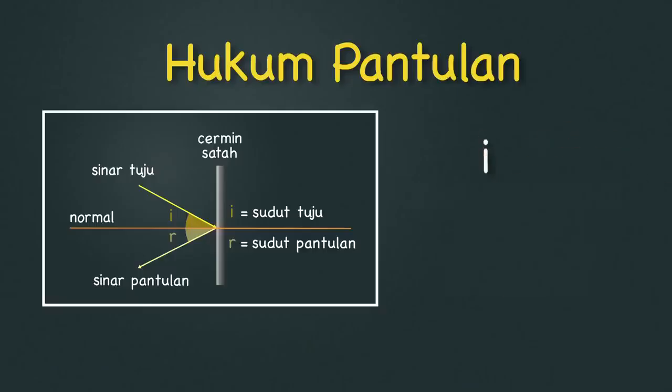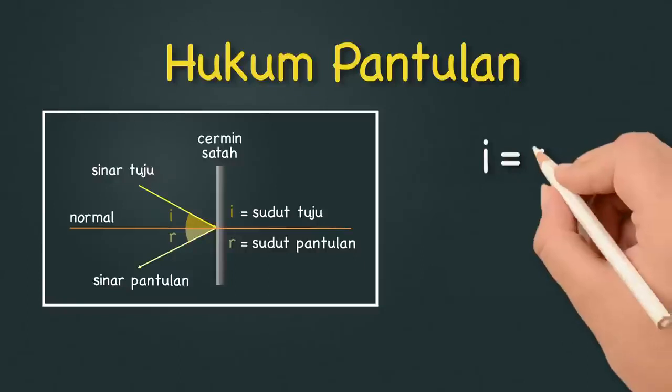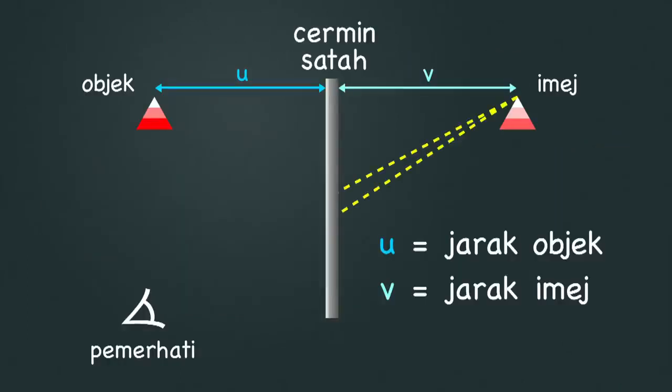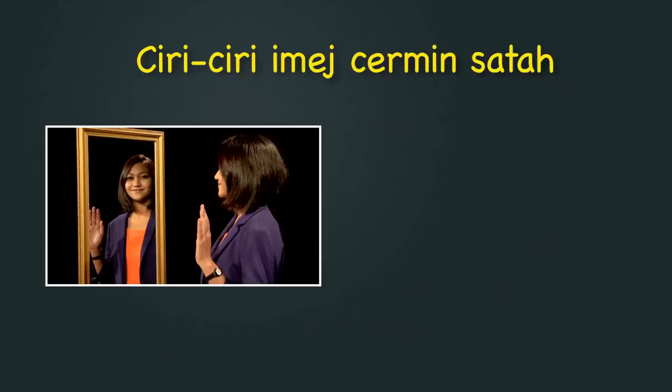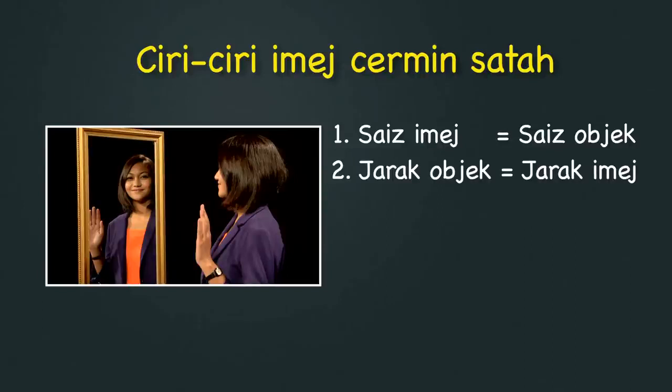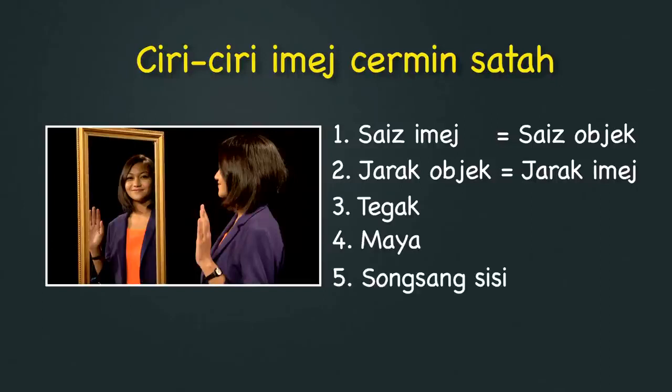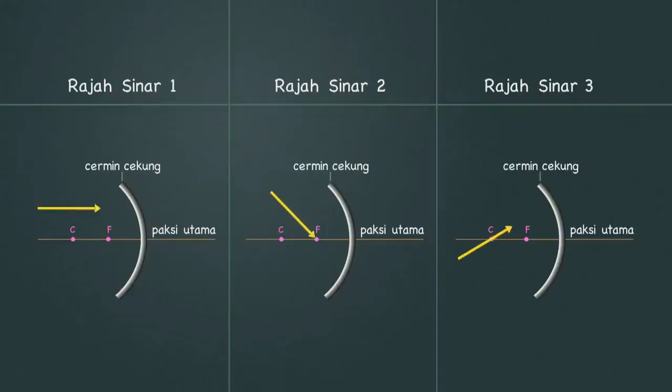Dan sekarang kita imbas kembali apa yang kita dah pelajari setakat ini. Hukum pantulan menyatakan sudut 7 sama dengan sudut pantulan. Kita telah pelajari teknik melukis imej pada cermin satah. Antara ciri-ciri imej yang terbentuk pada cermin satah ialah saiz imejnya sama dengan saiz objek, jarak objek sama dengan jarak imej, tegak, maya, song sang sisi. Kita juga telah melukis 3 rajah sinar untuk cermin cekung. Lebih banyak anda berlatih melukis, lebih mahir anda dengan topik ini.